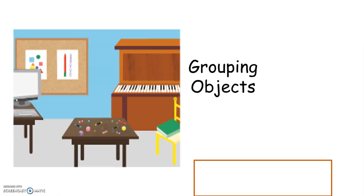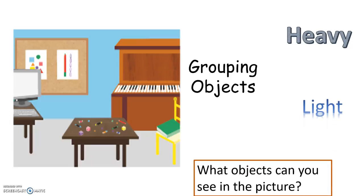The children will be grouping objects into heavy and light. What objects can you see in the picture? Can you guess which ones will be grouped into the heavy category and which will be grouped into the light?